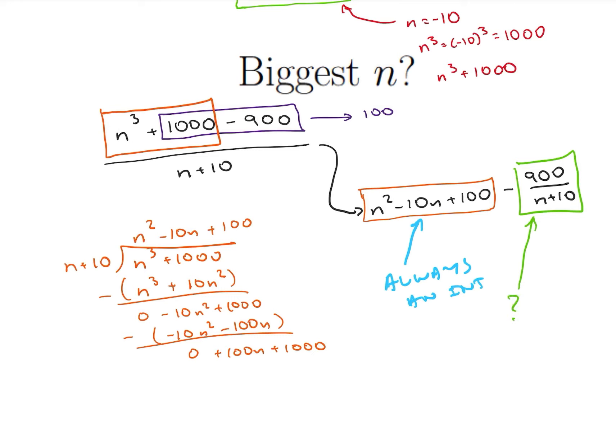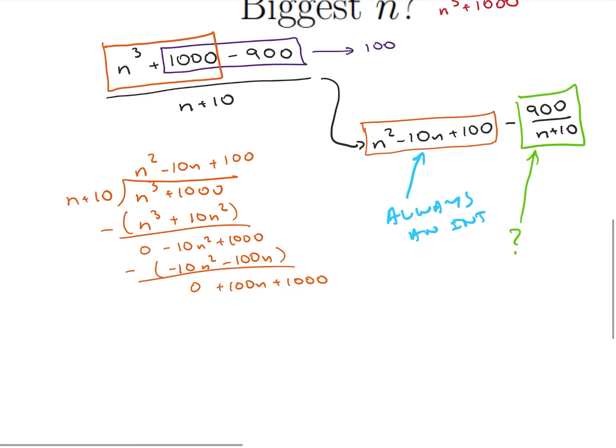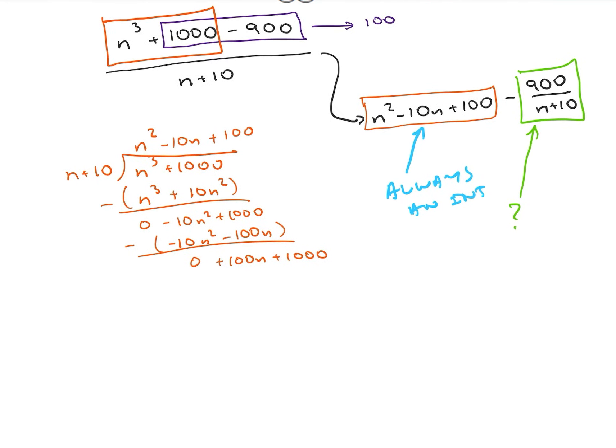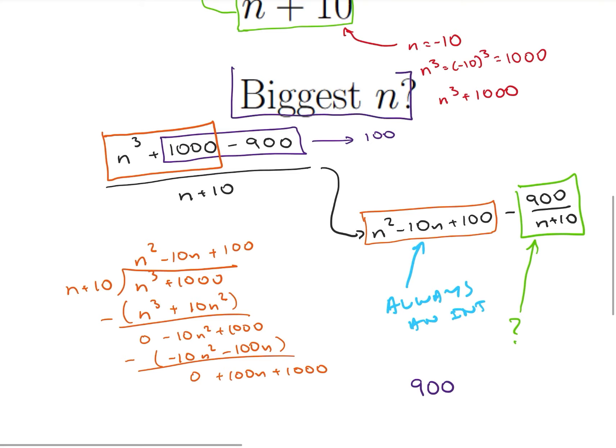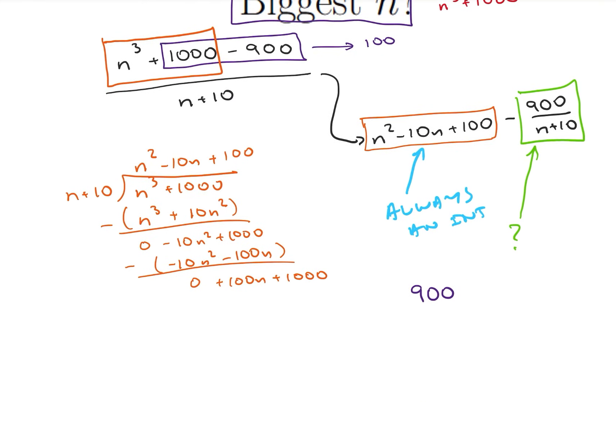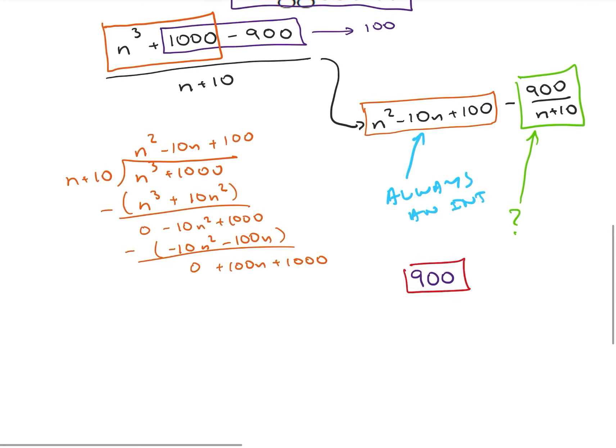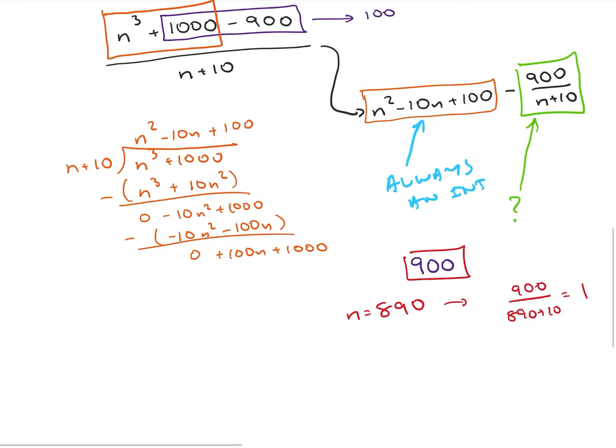Okay, so this is a nice little easy problem. So what it's really asking is what is the greatest common denominator, or what is the greatest divisor of 900? The greatest divisor, because remember I'm looking for the biggest n, the greatest divisor of 900 is just 900. So what can I make n? I'll just make n equal to 890. And then I have 900 divided by 890 plus 10 is equal to 1, which is an integer. So the largest value I can make for n is 890, and that is going to be my solution.